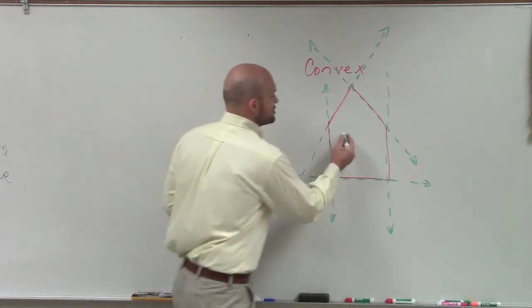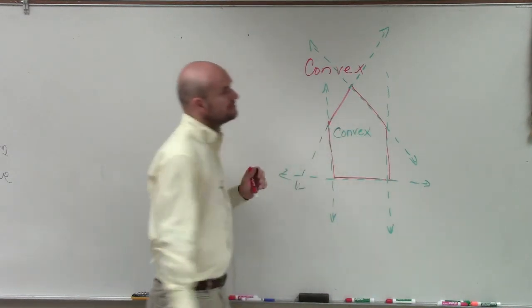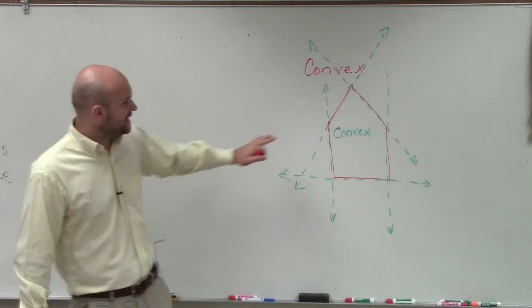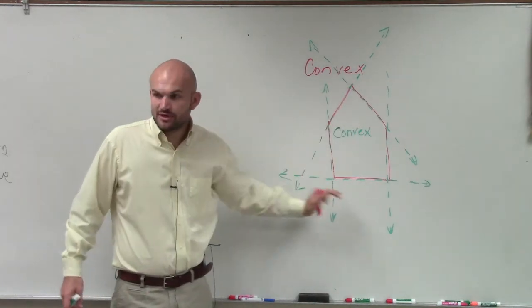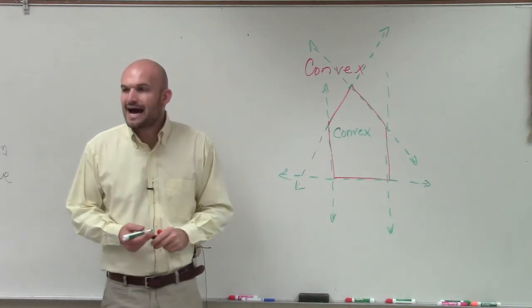Therefore, when you have a polygon, and the extended lines only intersect the perimeters and do not intersect the interior of the polygon, it is called convex.